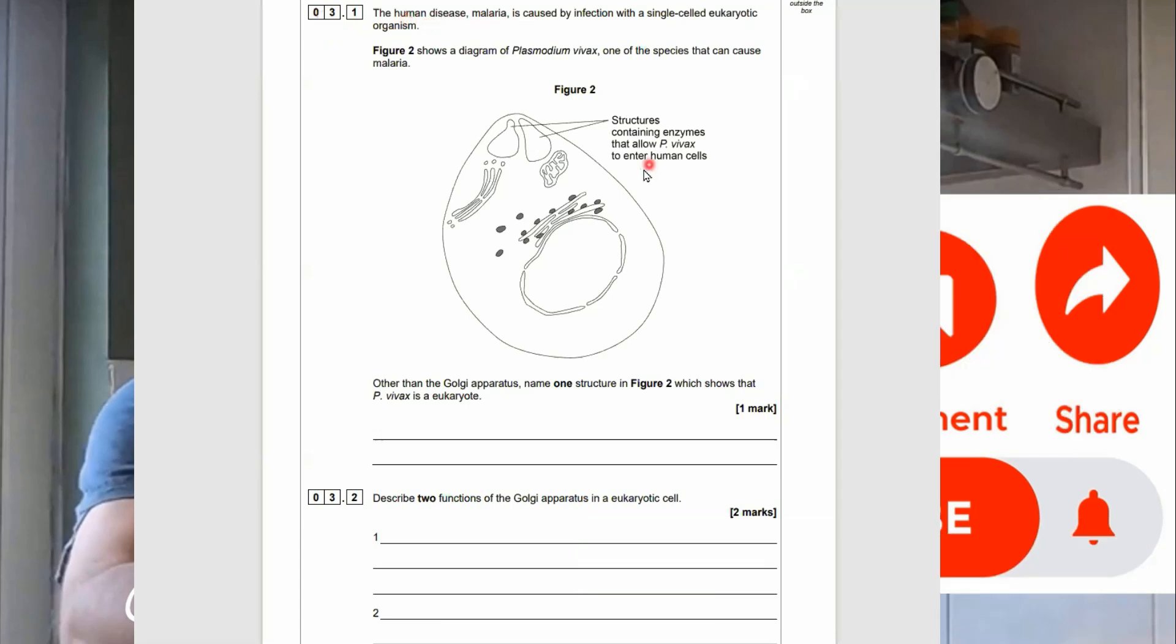So 3.1, the human disease malaria is caused by infection with a single-celled eukaryote organism. Figure 2 shows a diagram of plasmodium vivax, one of the species that can cause malaria. Structures containing enzymes that allow P-vivax to enter human cells. Other than the Golgi apparatus, name one structure in Figure 2 which shows the P-vivax is a eukaryote. You can see the Golgi apparatus here.